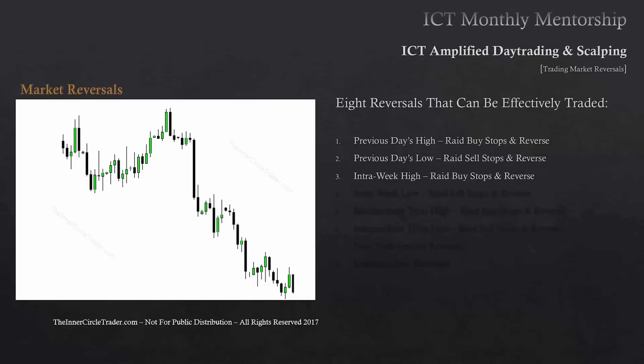The counterpart is seen in the form of an intra-week low, where the lowest low on the week is violated on the downside, the sell stops are raided, and the market reverses. Intermediate-term highs are a bit longer term — it may be a high of the previous week or the week before. We're looking for a run above an old high, basically, where the buy stops resting above that old high are raided and the market reverses.